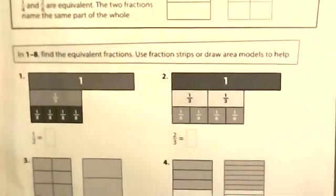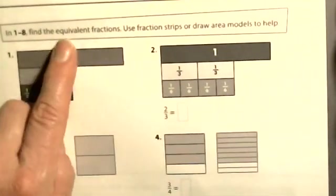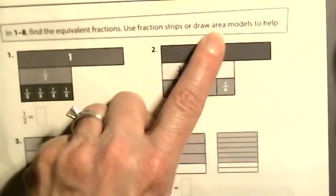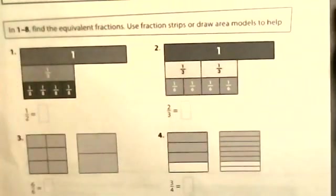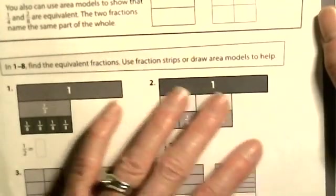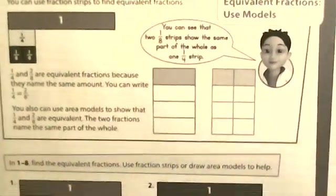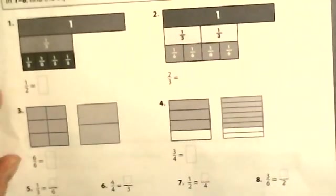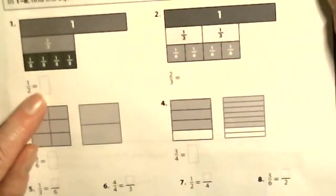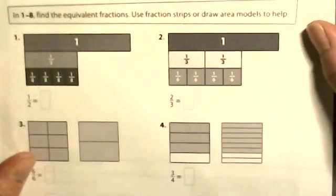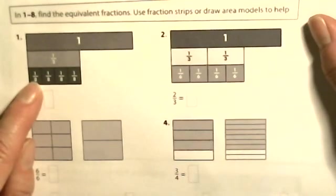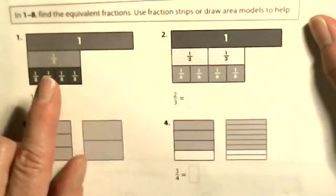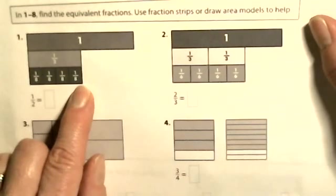In problems one through eight, find the equivalent fractions — use fraction strips or draw area models to help. These are area models; these are fraction strips. Let's see — here it says one-half equals... well, they're showing us a half. What are they showing us that it equals? I see eighths: one one-eighth, two one-eighths, three one-eighths, four one-eighths.